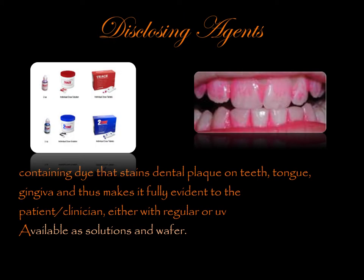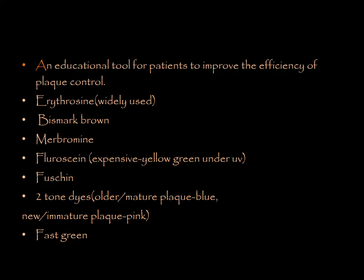A disclosing agent contains dye that is used to stain dental plaque on teeth, tongue, and gingiva, making it visible to the patient or clinician under regular or UV light. It is available as solutions and wafers, and is used as an educational tool for patients to improve plaque control. Examples include erythrosin, bismarck brown, bromphenol blue, fluorescein, fuchsin, and two-tone dyes — the last of which differentiates between mature plaque (stained blue) and immature plaque (stained pink). Fast green is another example. These agents are mainly used for visualizing plaque and for patient education.